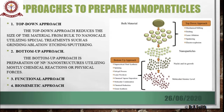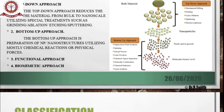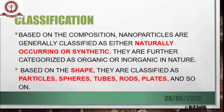An example of the top-down approach is the manufacture of nanocomposites. Nanoparticles are classified based on availability — either naturally occurring or synthetic — and may be further categorized as organic or inorganic in nature. Based on shape, they are classified into particles, spheres, tubes, rods, plates, and so on.